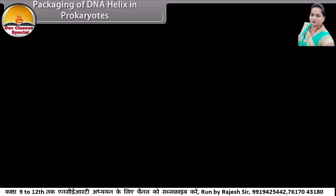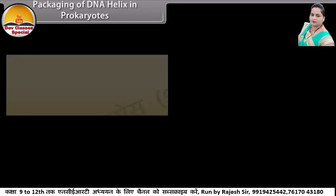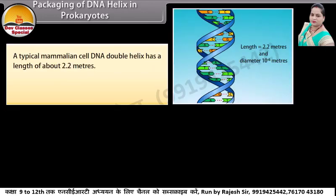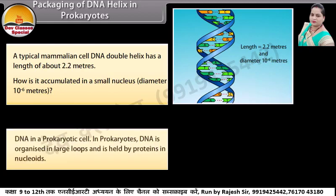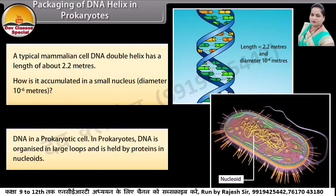Packaging of DNA helix in prokaryotes. A typical mammalian cell DNA double helix has a length of about 2.2 meters. How is it accumulated in a small nucleus? In prokaryotes, DNA is organized in large loops and is held by proteins in nucleoids.